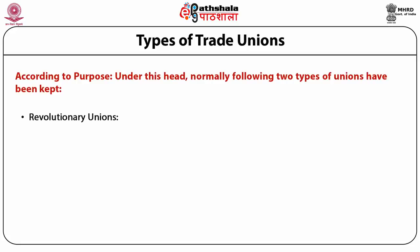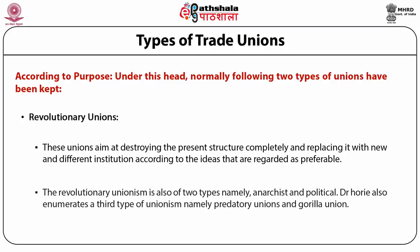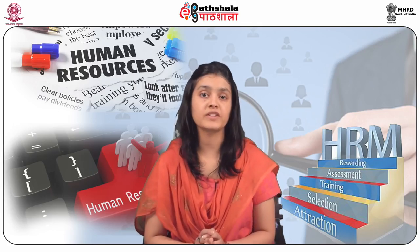Second, revolutionary unions. These unions aimed at destroying the present structure completely and replacing it with new and different institutions according to the ideas that are regarded as preferable. The revolutionary unionism is also of two types, namely anarchist and political. Dr. Hori also enumerates a third type of unionism, namely predatory unions and guerrilla unions.